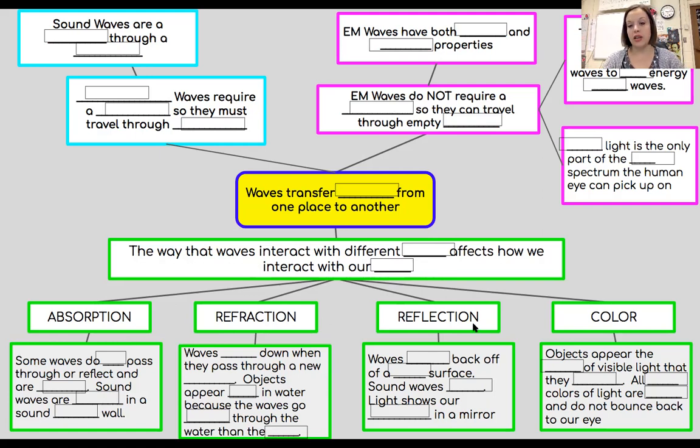I'm going to start over here with absorption. So some waves do not pass through or reflect and they are absorbed. So waves do not pass through. Those are absorbed. So sound waves are absorbed in a soundproof wall. That's an example there. If you can't hear someone in the other room, that's because those sound waves aren't passing through that really dense matter. So this last part, it should say sound waves are absorbed in a soundproof wall.